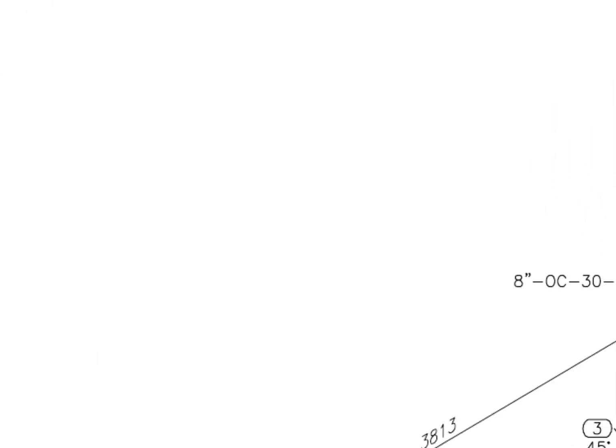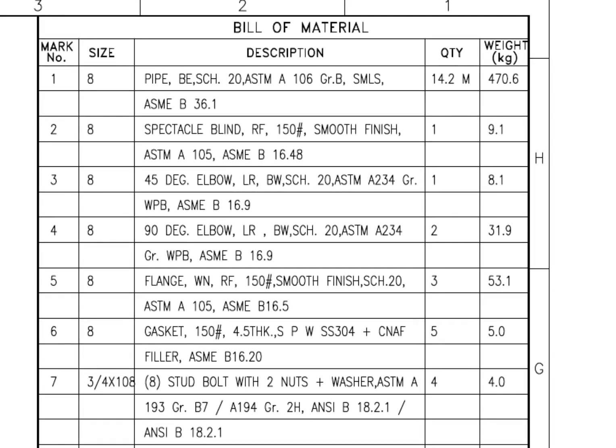Go to the material list. Item number 1 is bevel end, schedule 20, seamless pipe.